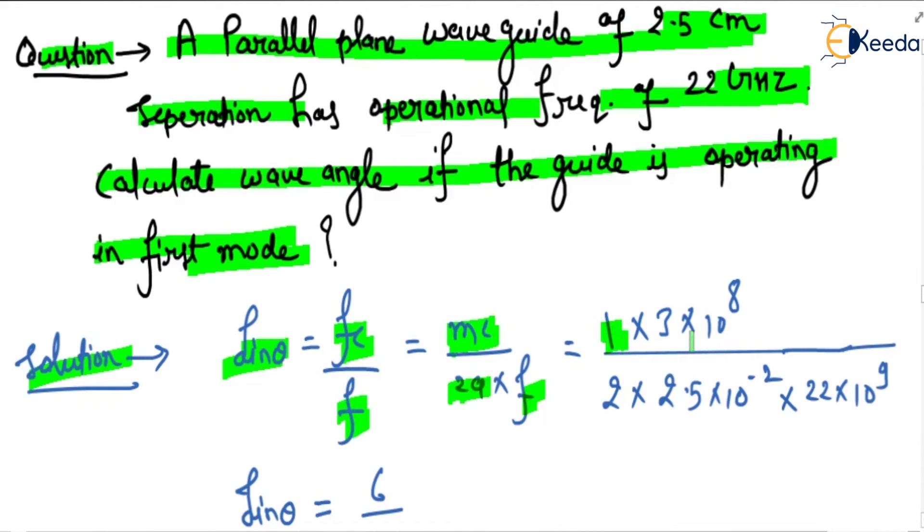m is given 1, c is 3 into 10 to the power 8, 2 into a, where a is the guide separation. Guide separation is given 2.5 cm, so 2.5 into 10 to the power minus 2, and operating frequency is 22 GHz,